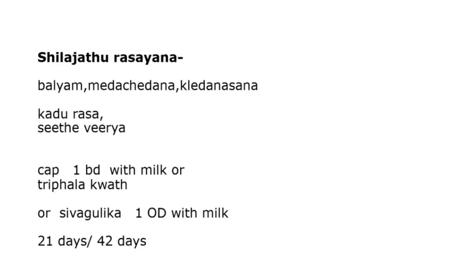Shilajit Rasayana: Shilajit — medium quantity — one Odi with milk for 21 days or 42 days. This is very rejuvenating. But it does not prevent recurrence; only for rejuvenation and well-being is this Shilajit Rasayana used.